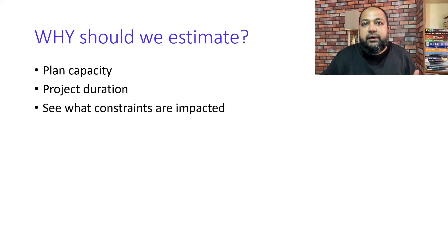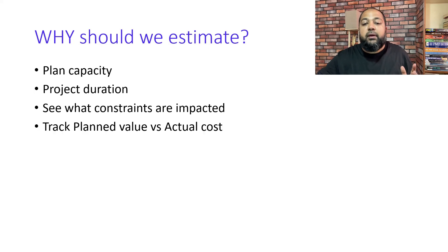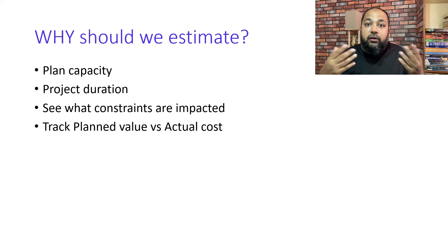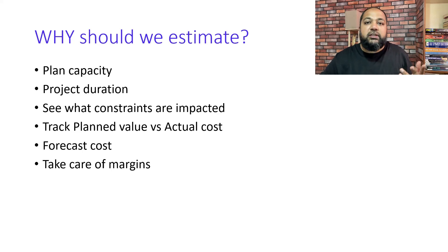Estimation helps us see what constraints are impacted. For example, if there is a particular deadline and you have to put more money to get things done within that time, that's a constraint. Estimation also helps us track the plan value versus the actual value — are we on track, can we control the cost, are we meeting the project timeline and quality? It helps us forecast how much money is needed and what margins we're going to get.